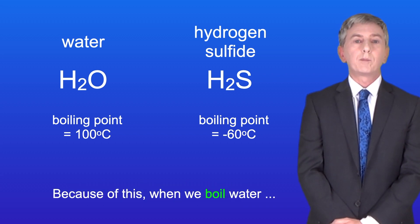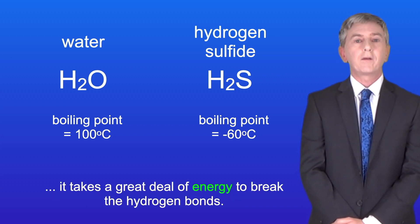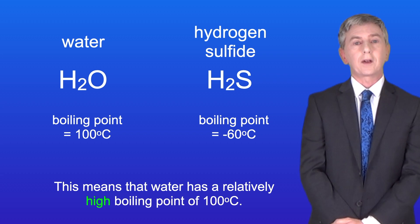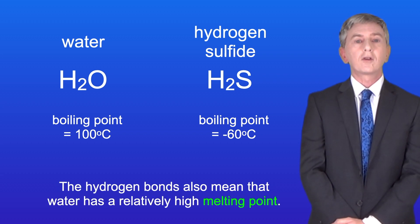Because of this, when we boil water, it takes a great deal of energy to break the hydrogen bonds. This means that water has a relatively high boiling point of 100 degrees Celsius. The hydrogen bonds also mean that water has a relatively high melting point.